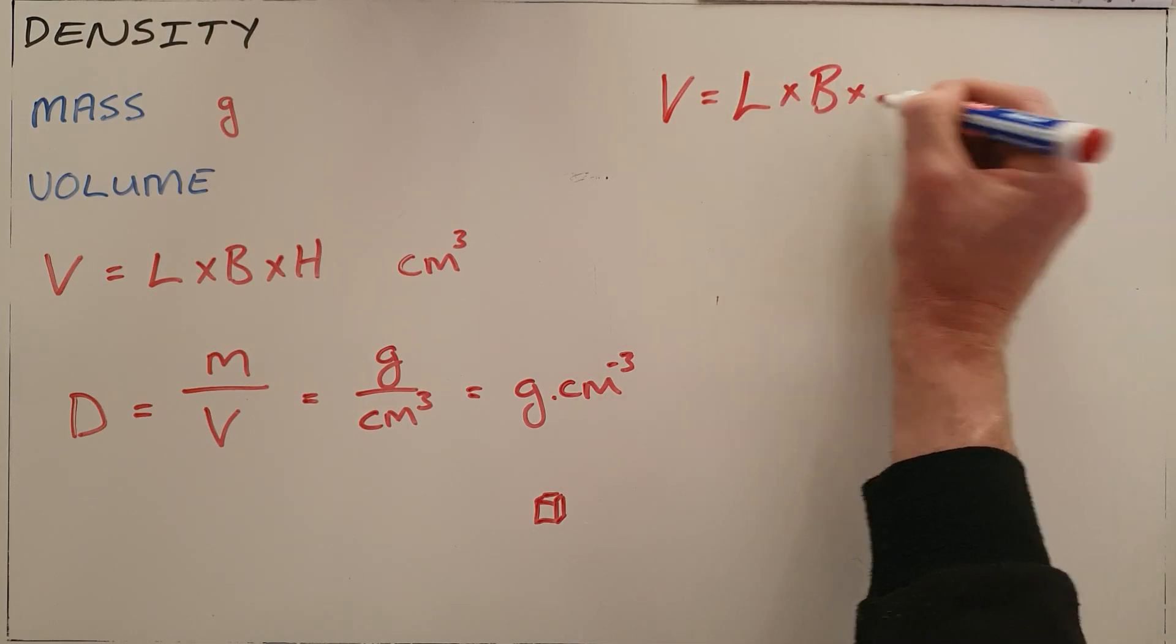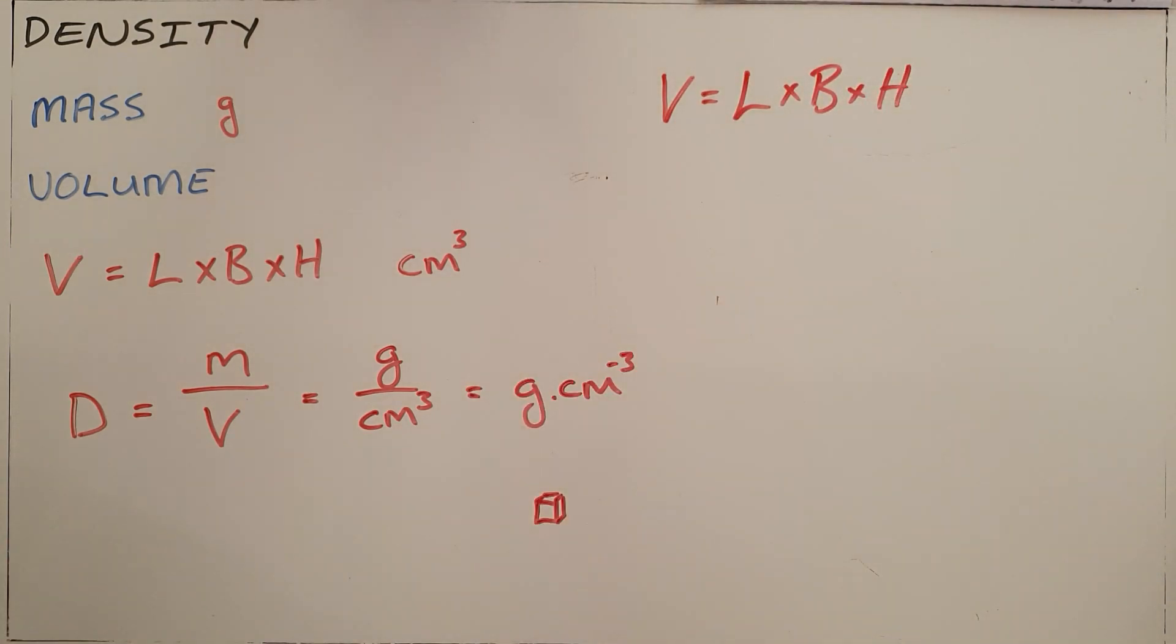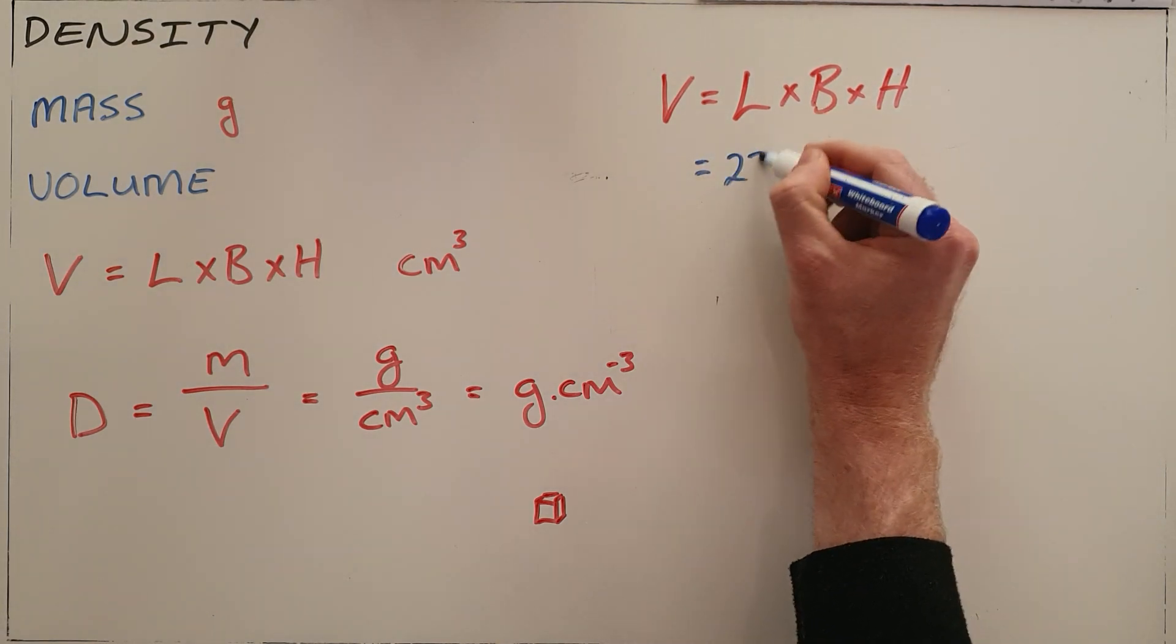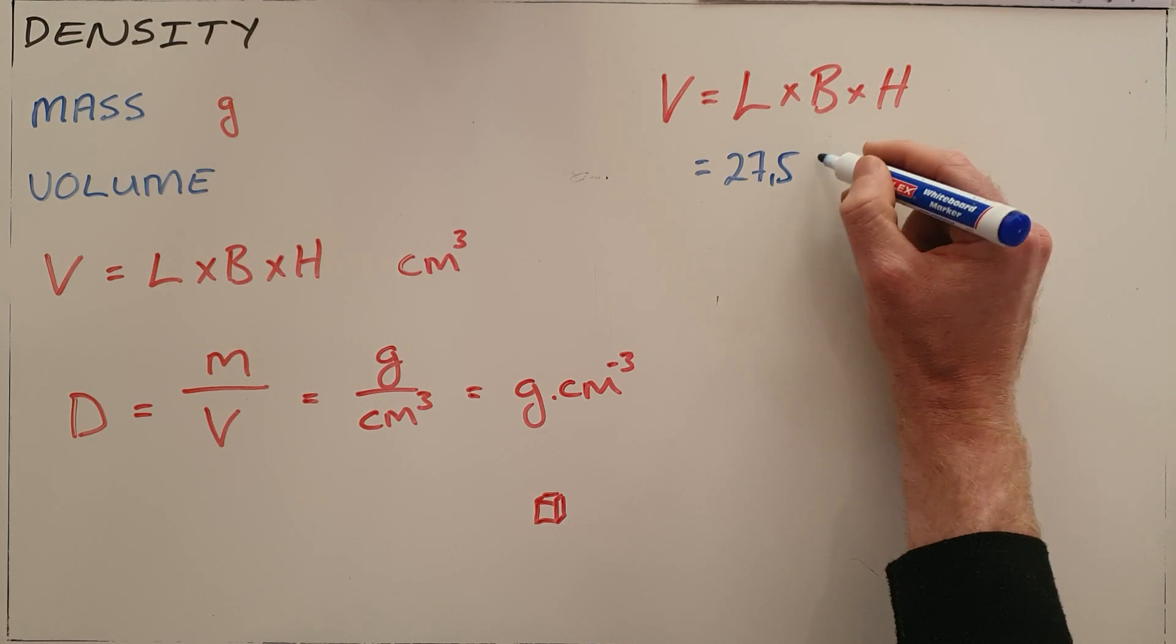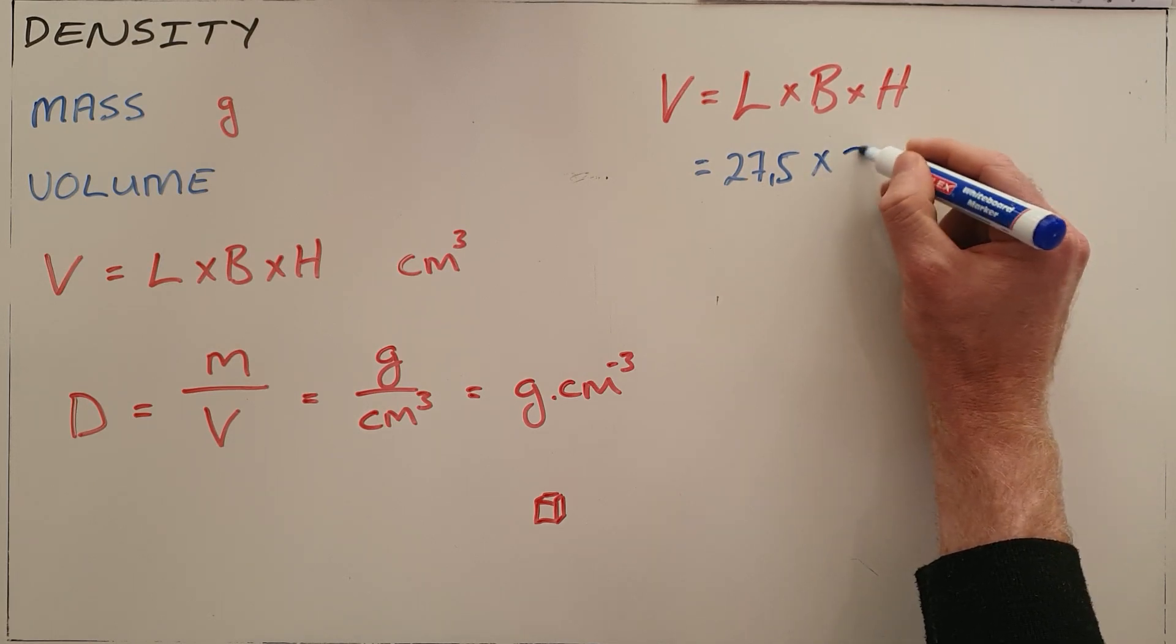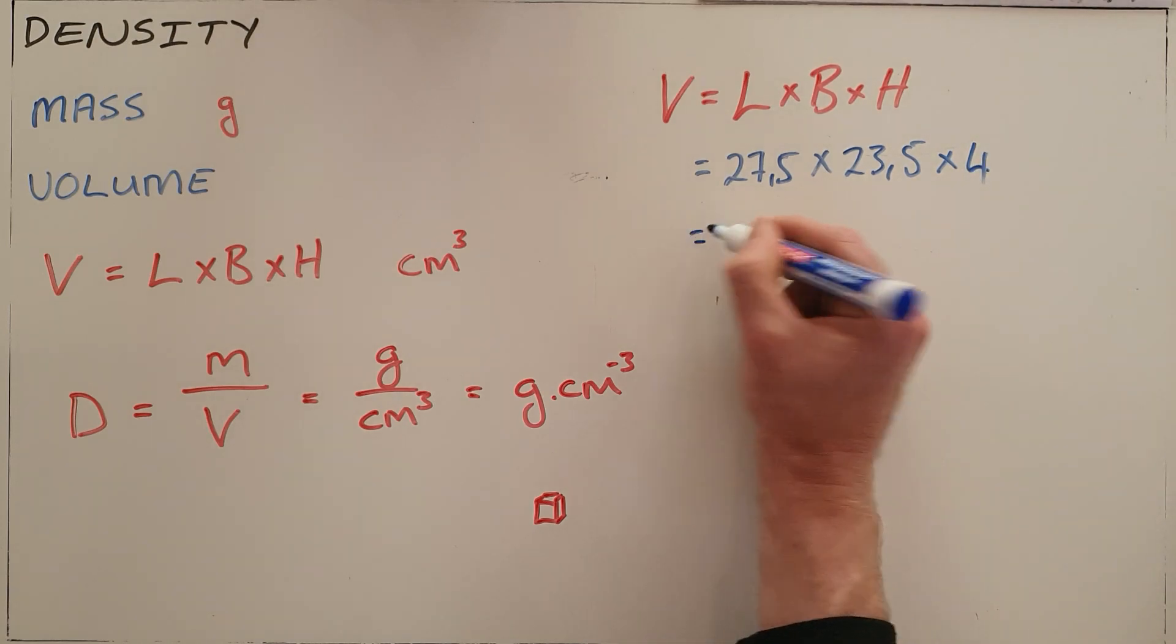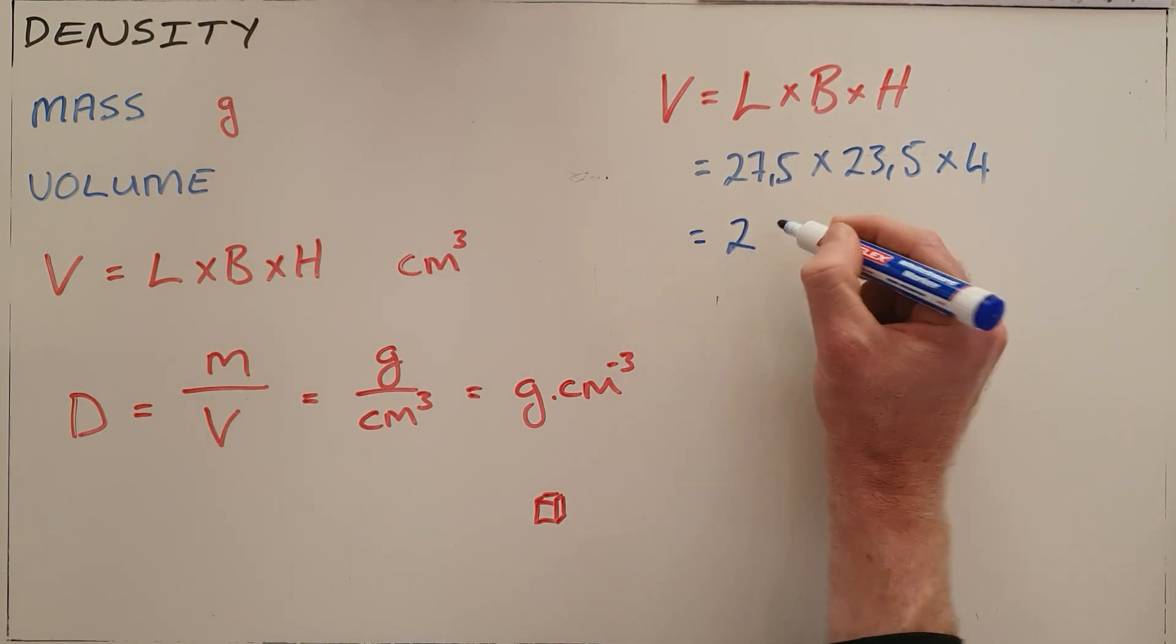We found that it has a length of 27.5 centimeters, a breadth of 23.5 centimeters, and a height or thickness of 4 centimeters, which means its total volume is 2585 cubic centimeters.